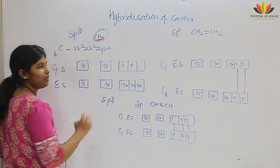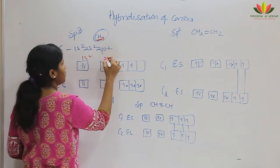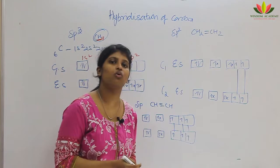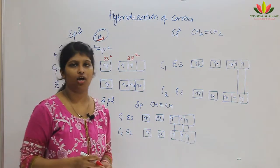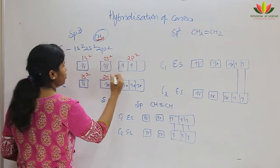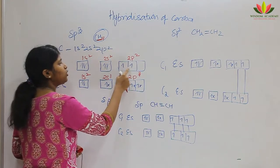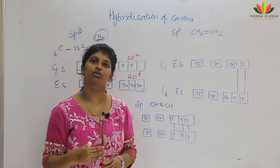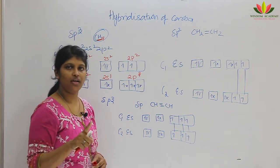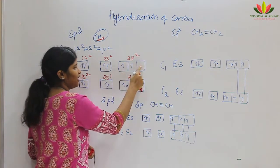Carbon's electronic configuration is 1s2, 2s2, 2p2. I have written this in an orbital diagram — this is the ground state. In order to react with other elements, carbon has to go to the excited state, because in the excited state atomic orbitals react and mix with each other. In the excited state it becomes 1s2, 2s1, 2p3, because carbon's valence is four. In the ground state we have only two unpaired electrons, but we need four unpaired electrons to bond with hydrogen. For a covalent bond, each element should have at least one unpaired electron.